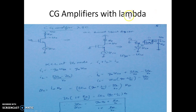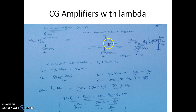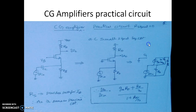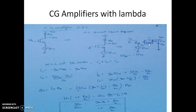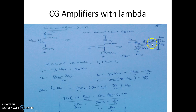Now we shall consider a CG amplifier with a non-zero lambda value. In the AC small signal circuit the gate is grounded and VDD is grounded, and the output is taken at the drain. In this small signal model one difference is that we are considering R0, which is between the drain and the source. RD is connected from the output to ground. We need to obtain the expression for AV.